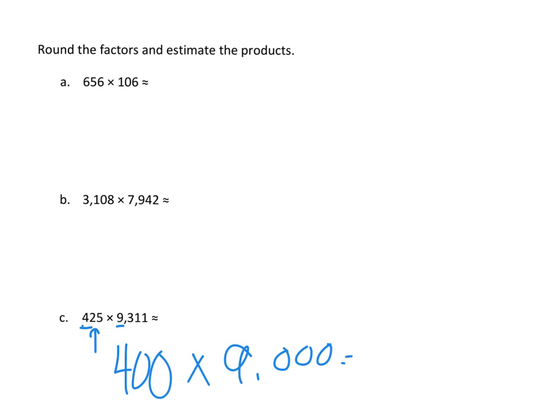4 times 9 is 36. 1, 2, 3, 4, 5 zeros. Just let me fix my commas. My answer is about 3,600,000.